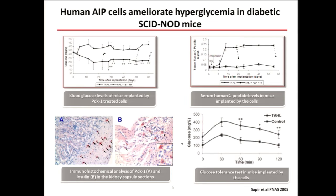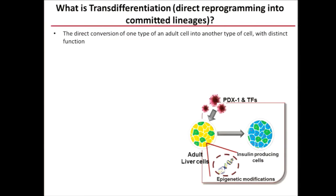The number of cells was not enough to bring mice to normal glycemia. But the glucose tolerance test very much resembled a normal glucose tolerance test.